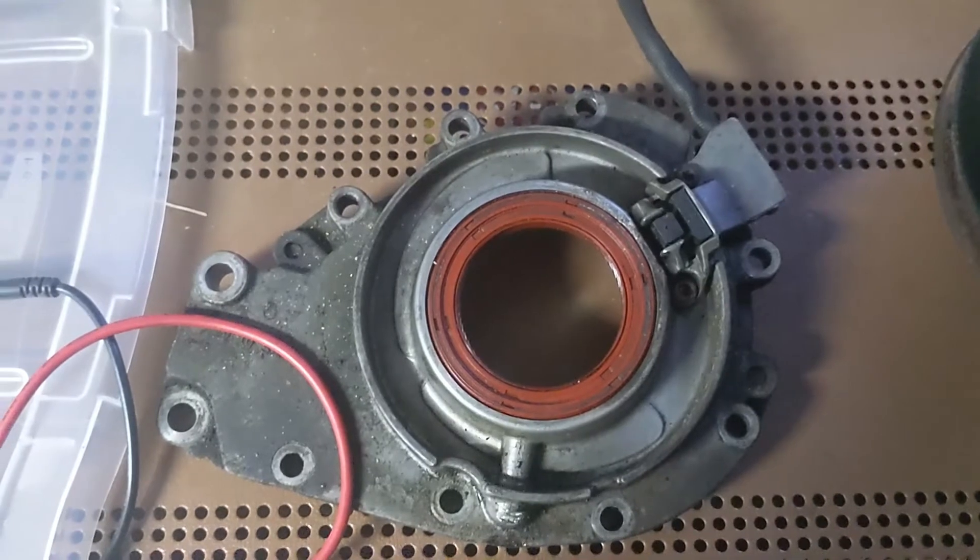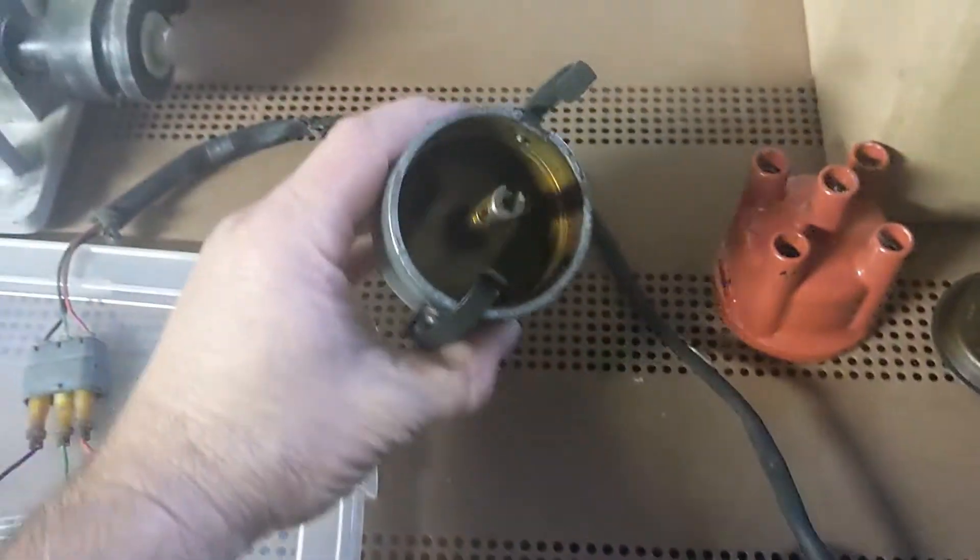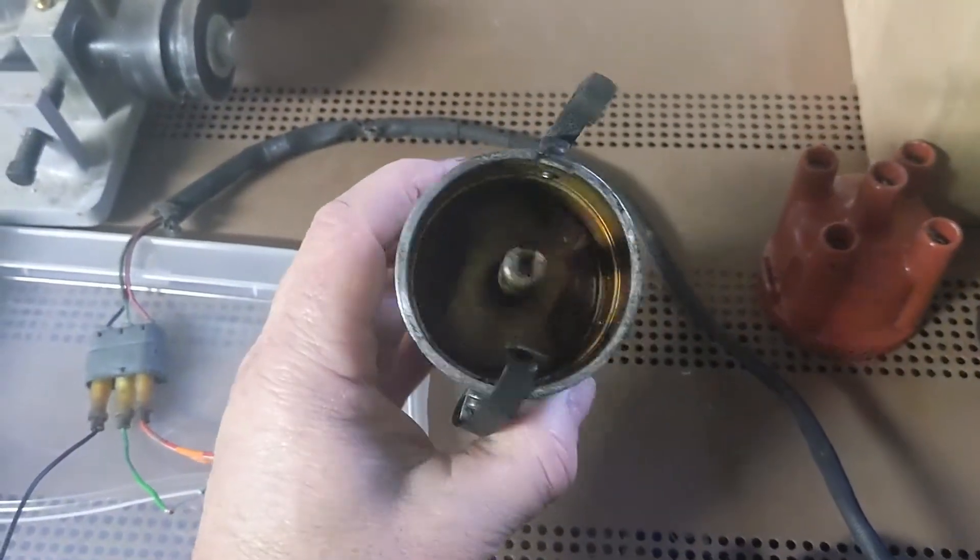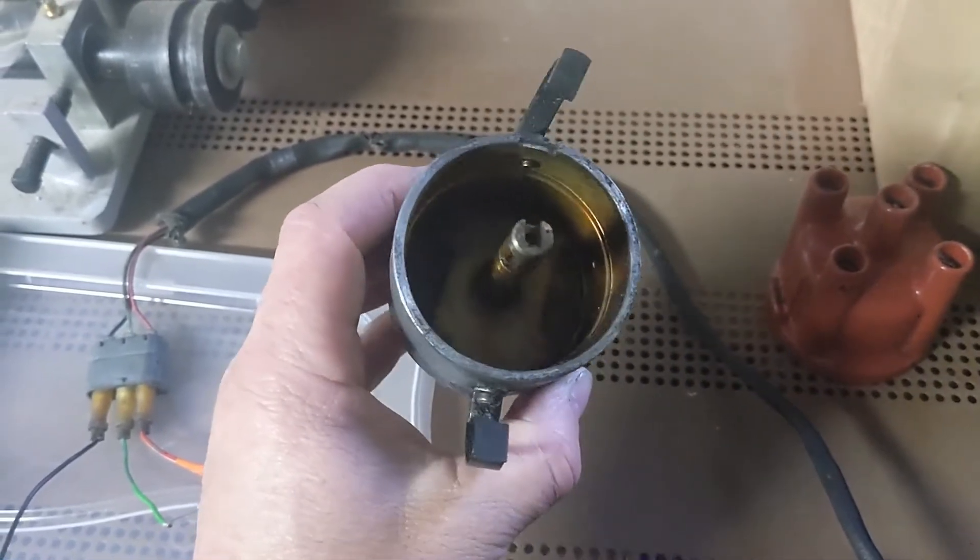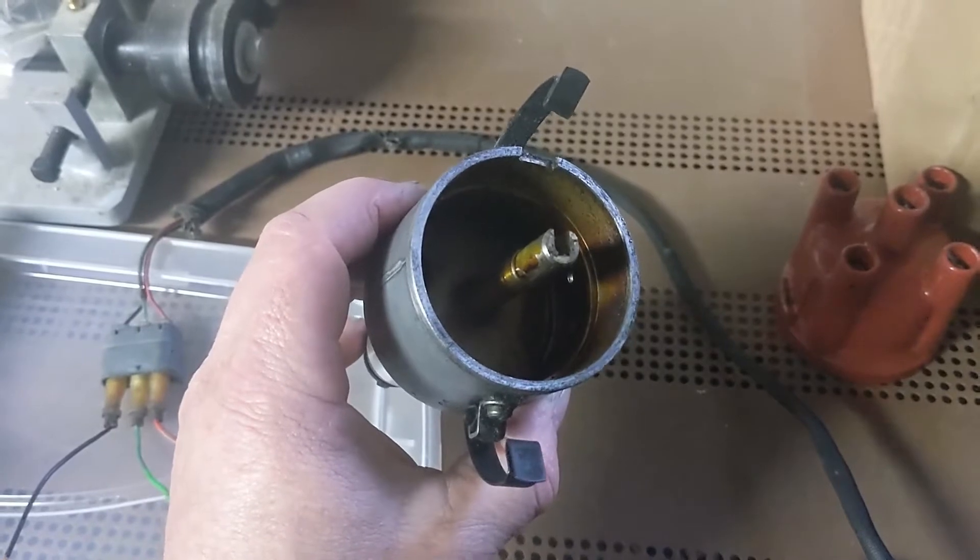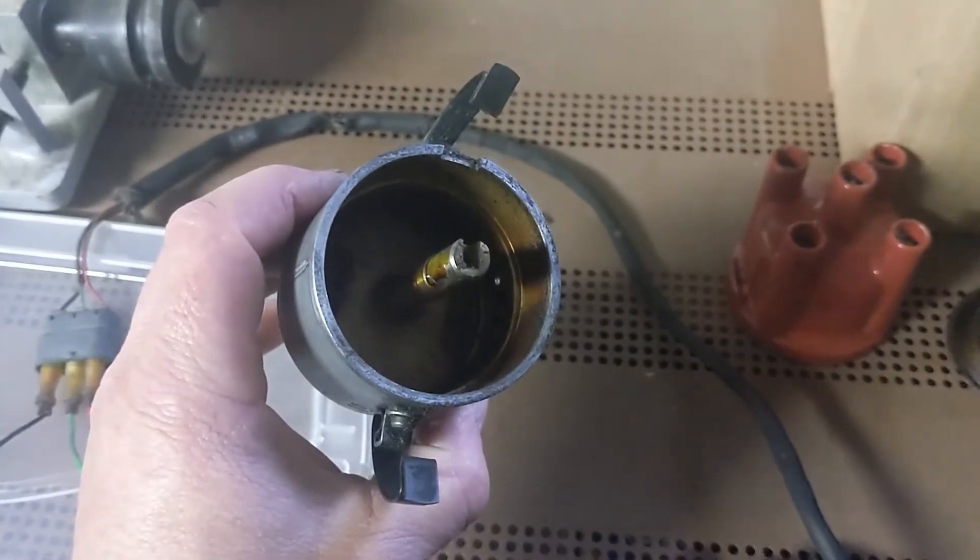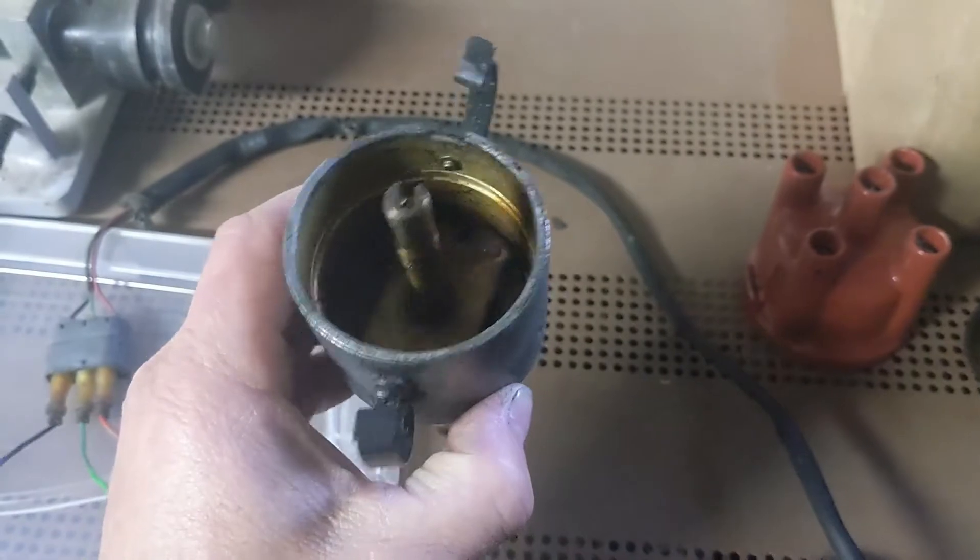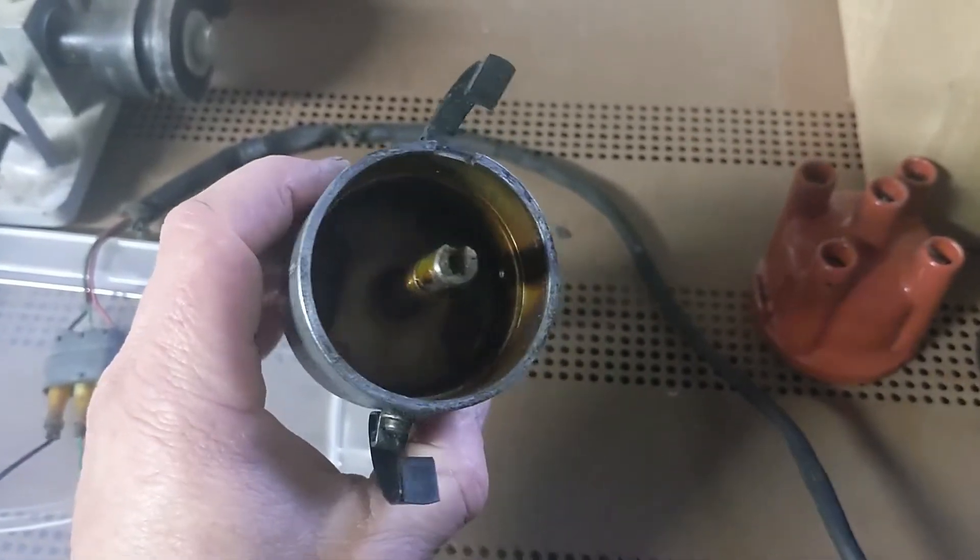On these cars, on the 88-plus non-turbos, the distributor is empty. There's no electronics in there at all. The only purpose this thing serves is to get spark from the coil to an individual spark plug. So we still have a rotor and a distributor cap, and it still spins around, but there's no electronics in there. This thing is entirely mechanical.